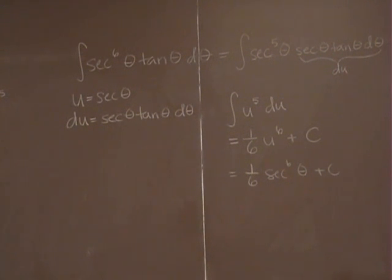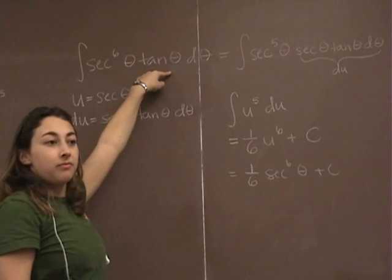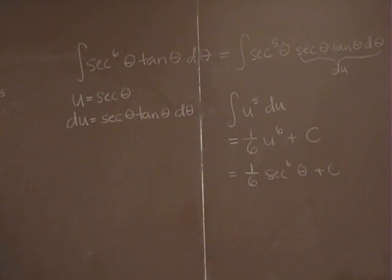Does that make sense? You cannot integrate secant to the sixth and multiply by the integral of tangent. If I'm integrating a product, the answer is not the product of the integrals. Why? Well, think about it in terms of derivatives. If I have two things multiplied together, is the derivative the product of the derivatives? No, you have to use the product rule. So you'd have to use a product rule in reverse if you had things multiplied together.